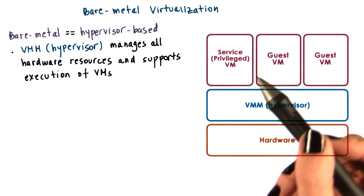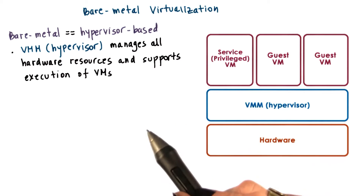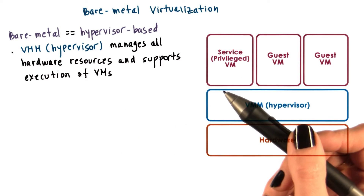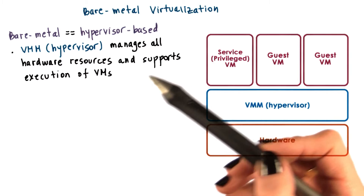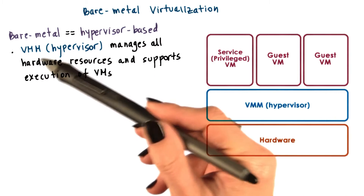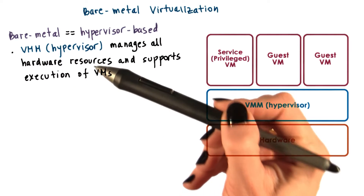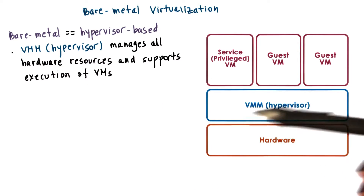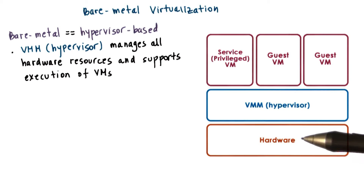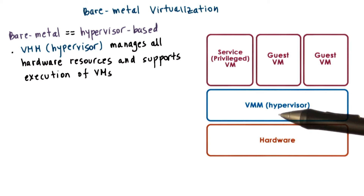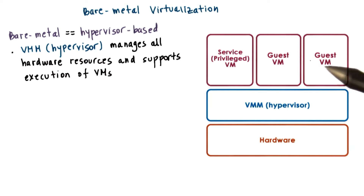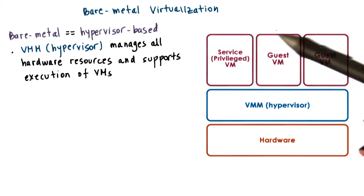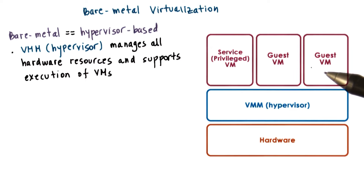The bare metal model is like what we illustrated before. A virtual machine monitor, or a hypervisor, is responsible for the management of the physical resources and it supports execution of entire virtual machines only.